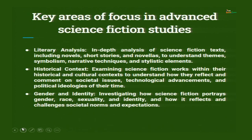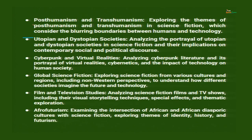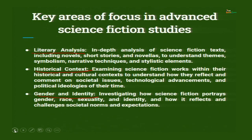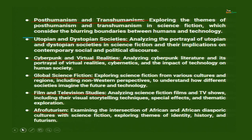Moving on to some key areas of focus in advanced science fiction studies: literary analysis, historical context, gender and identity, post-humanism and trans-humanism, utopian and dystopian societies, cyberpunk and virtual realities, global science fiction scenarios, film and television studies, and Afrofuturism. Post-humanism and trans-humanism explore the blurring boundaries between humans and technology. Post-humanism is the era when human beings are aided with body parts manufactured in an industry — artificially made. For example, somebody whose hand is cut off has been given an artificial arm that can move according to nerve signals; or a machine leg that gets signals from the body's nerve endings.